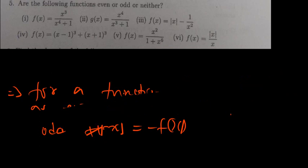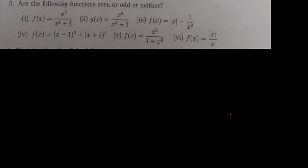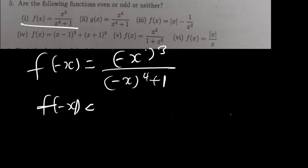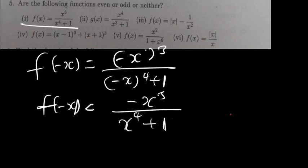Let's begin with the first question. I'll plug in negative x wherever there is x. So negative x raised to the power 3, then negative x raised to the power 4, plus 1. This gives me negative x to the power 3, and negative x to the power 4 becomes x to the power 4, plus 1. I can clearly see this is not the same as the original function, so it is not even.